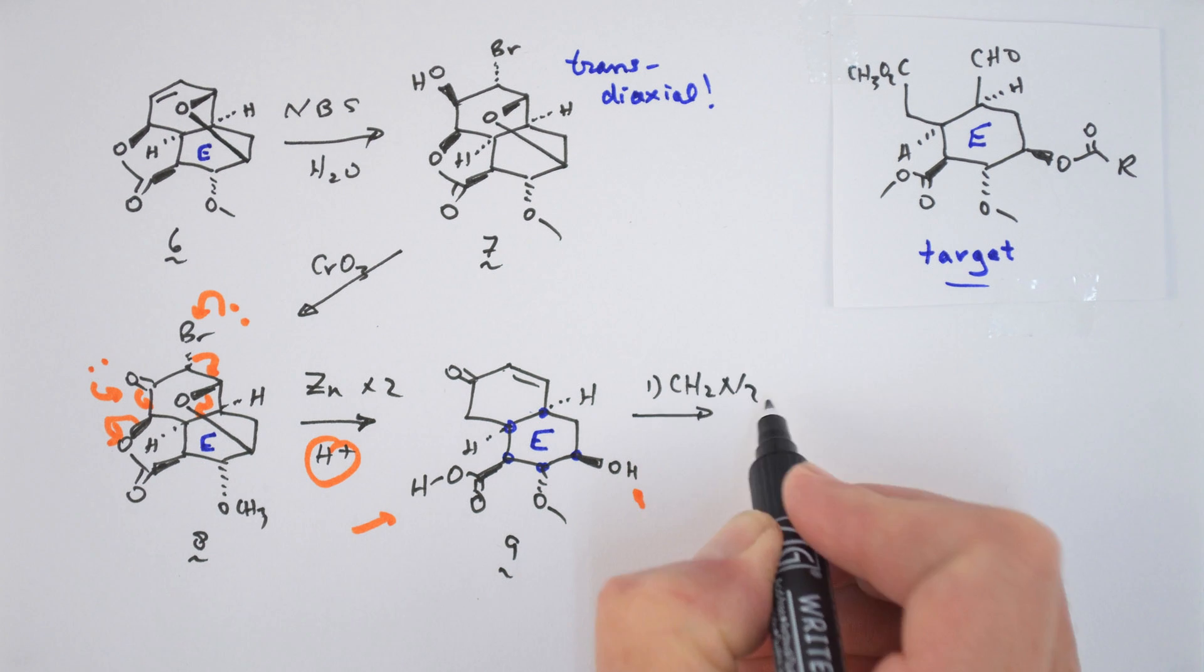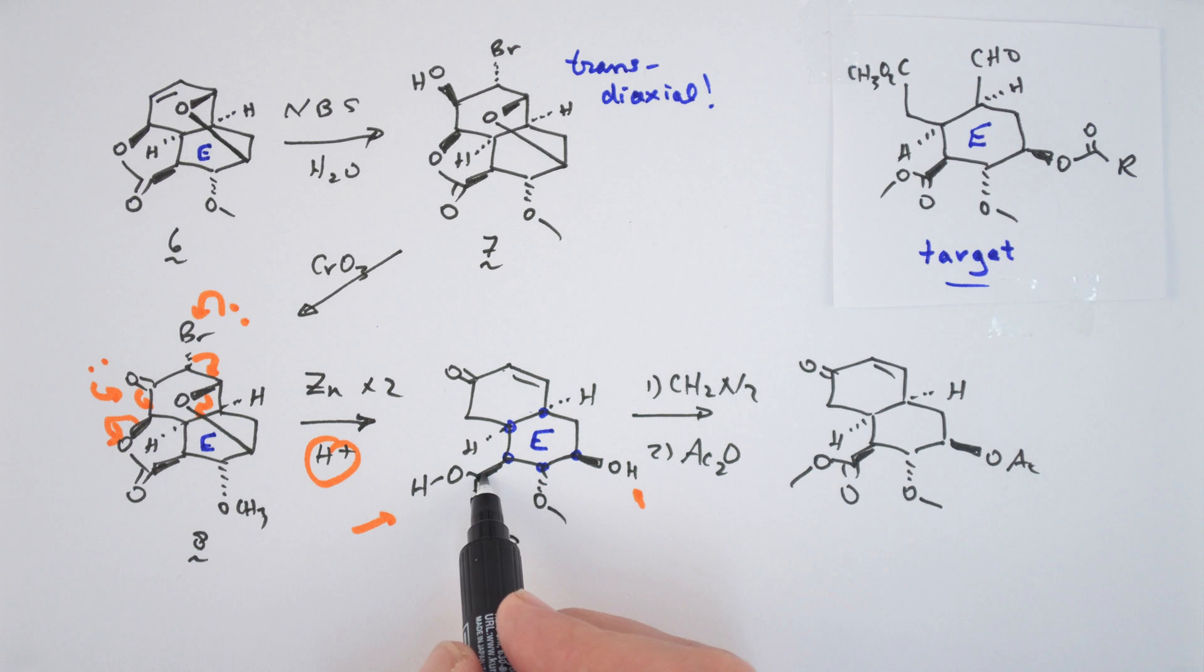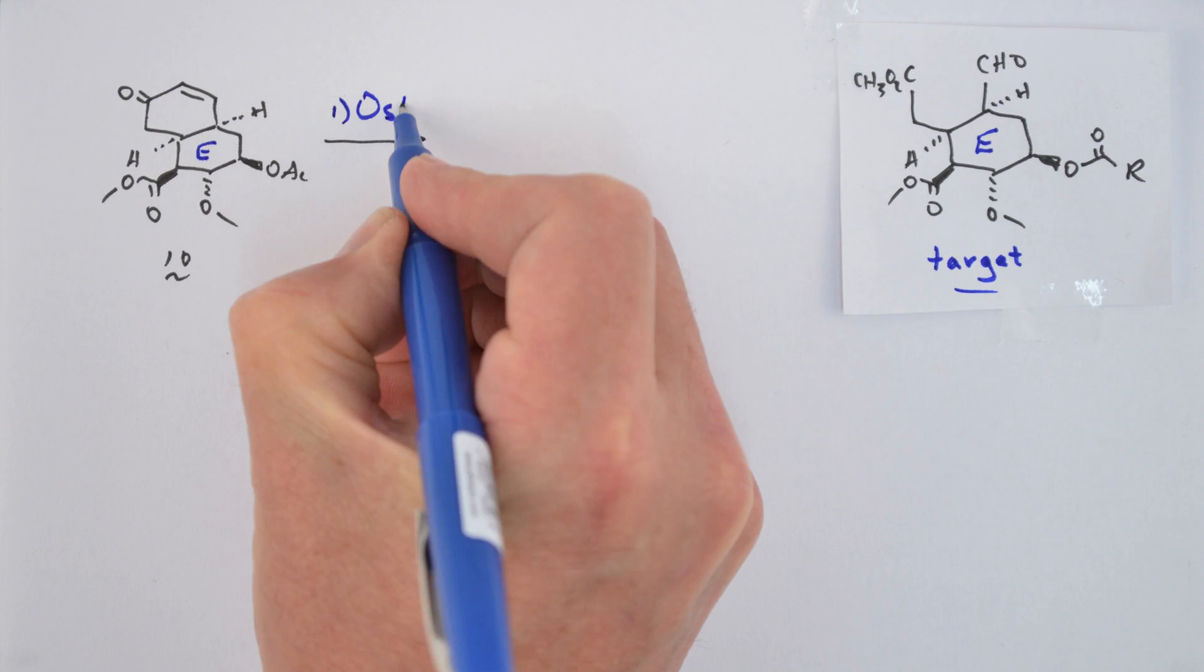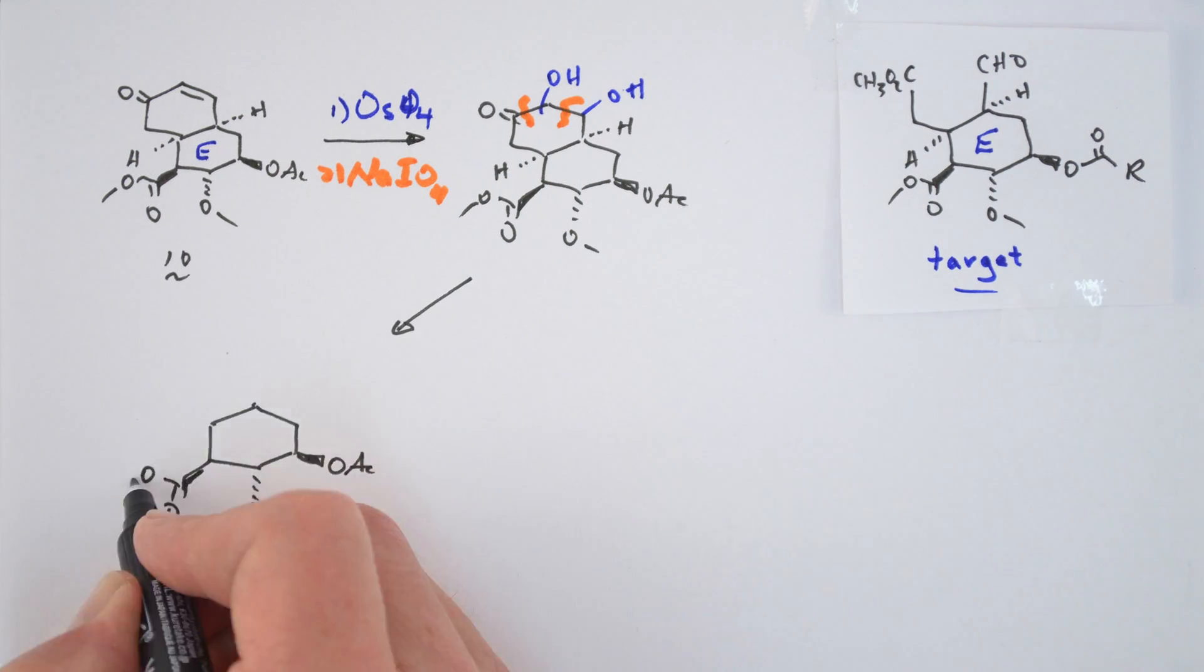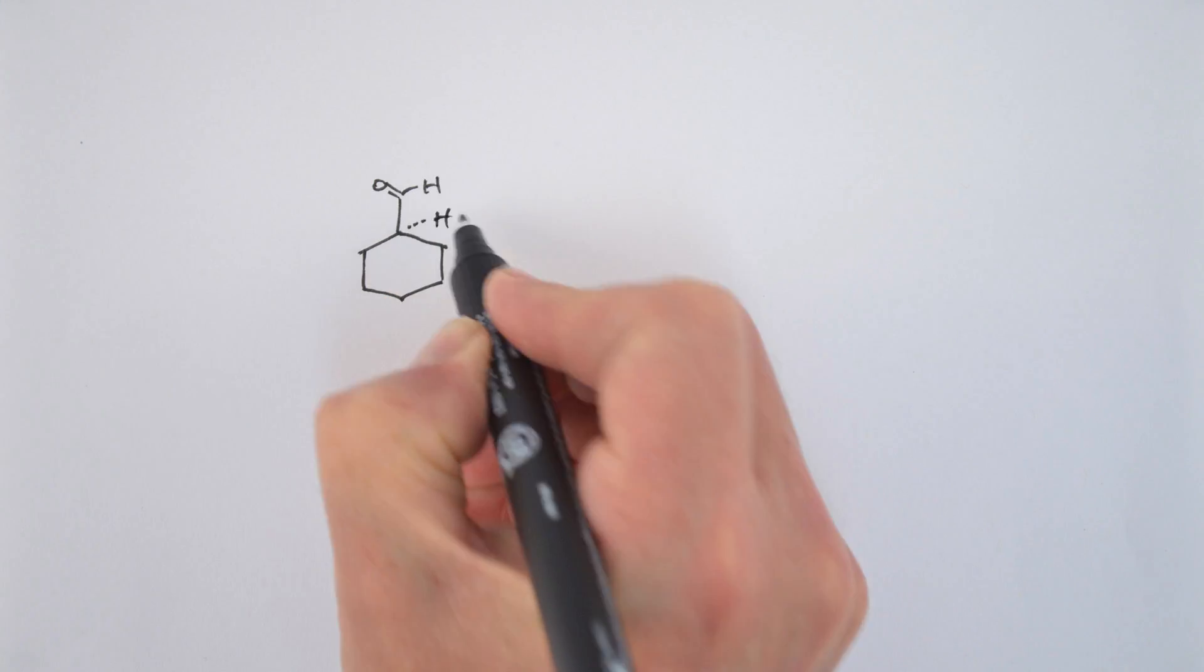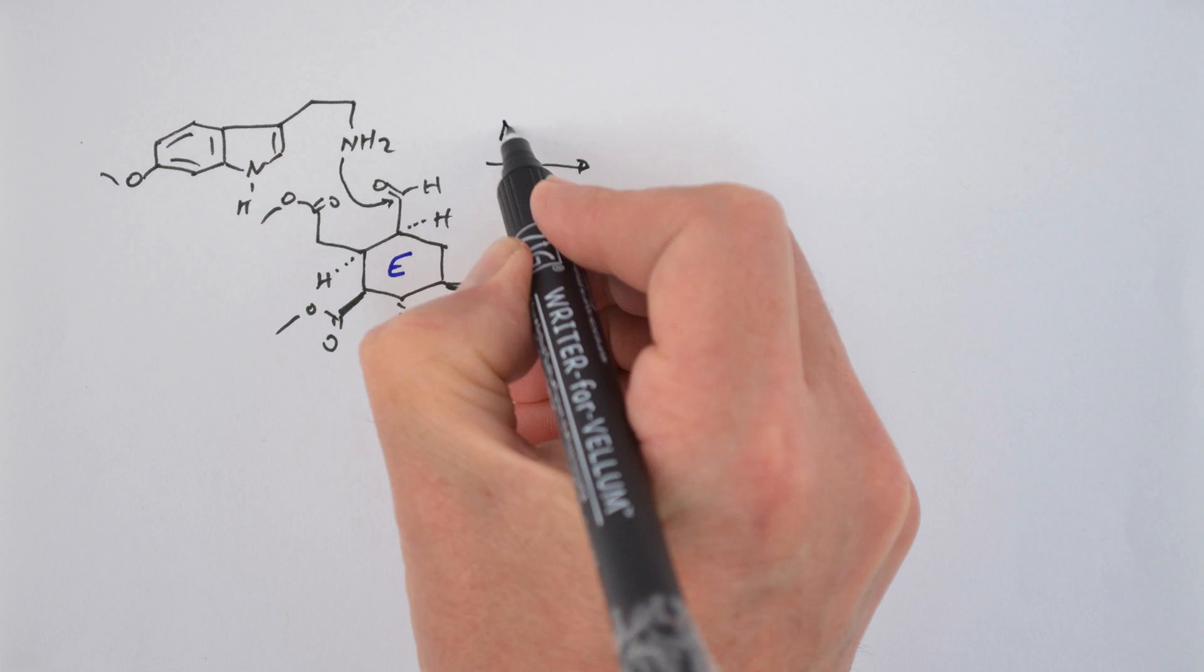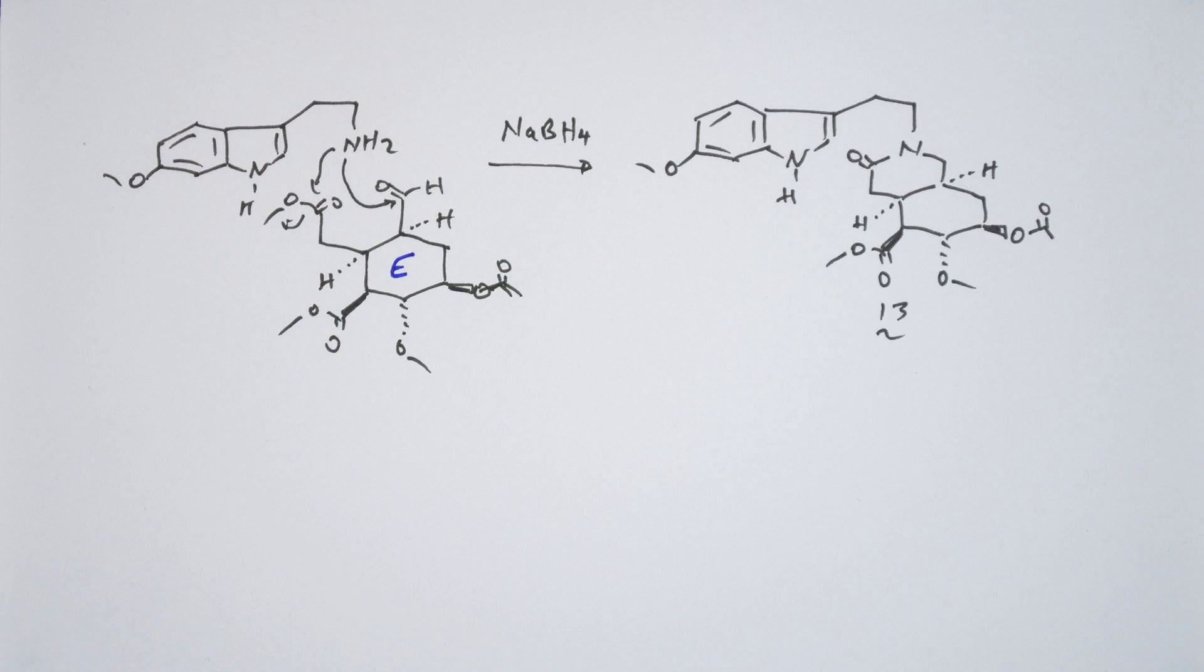The methyl ester was formed using diazomethane, and the free hydroxyl group was acetylated with acetic anhydride to give 10. Treatment of 10 with osmium tetroxide followed by cleavage between oxygen containing carbons gave 11. The acid was methylated with diazomethane, and that diester aldehyde was immediately reacted with 3-methoxytryptamine.